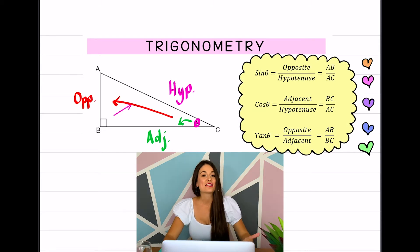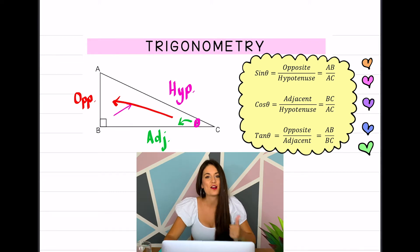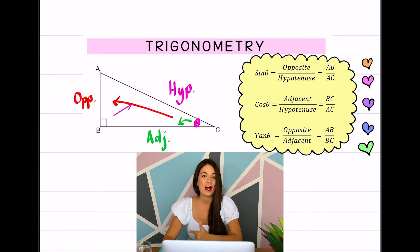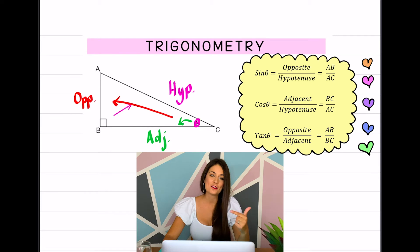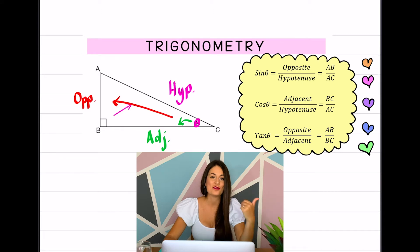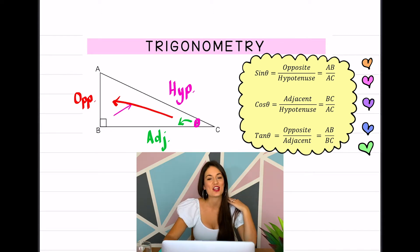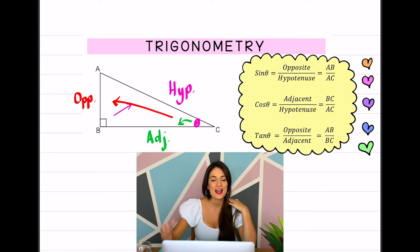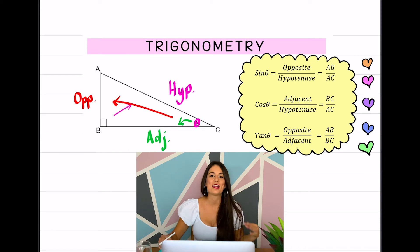Being able to identify the sides in relation to the angle is important so we can use our trig ratios. Sine — some old hens — is opposite over hypotenuse. Cos — cackle and howl — is adjacent over hypotenuse. Tan — till old age — is opposite over adjacent. You can see these labeled on the triangle on screen.